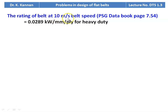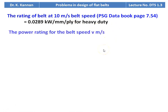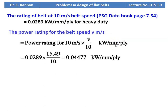The rating of the belt at 10 meters per second belt speed — refer to PSG data book page 7.54. For heavy duty application (22 kilowatt), we take 0.0289 kilowatt per millimeter per ply. Power rating for the calculated belt speed = rating for 10 m/s × (V / 10) = 0.0289 × (15.49 / 10) = 0.04477 kilowatt per millimeter per ply.